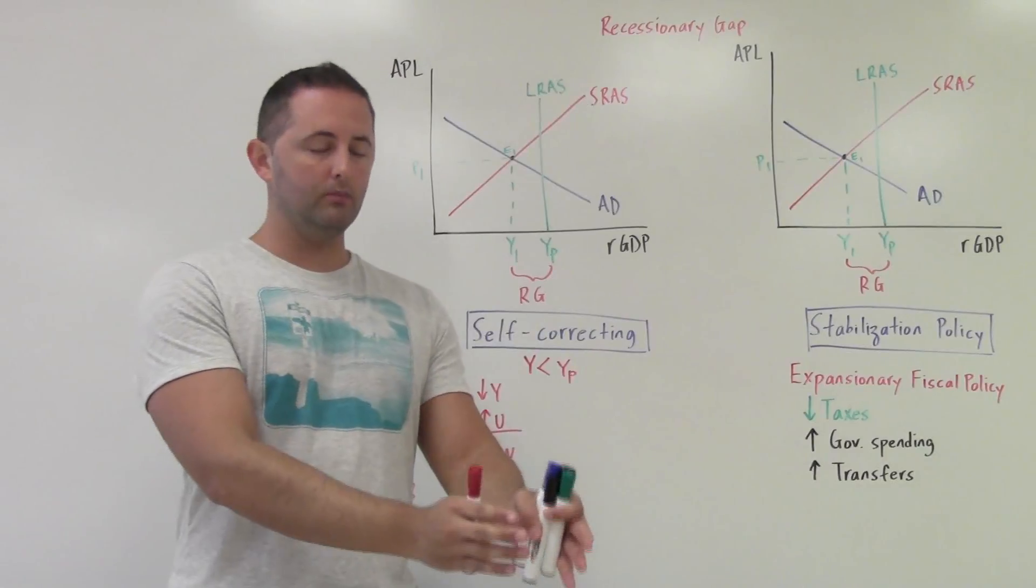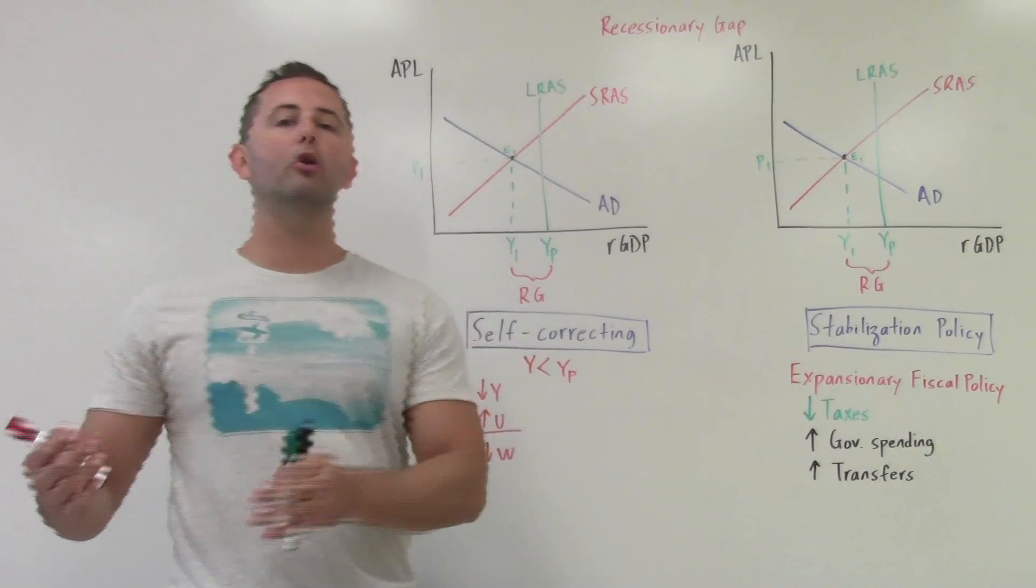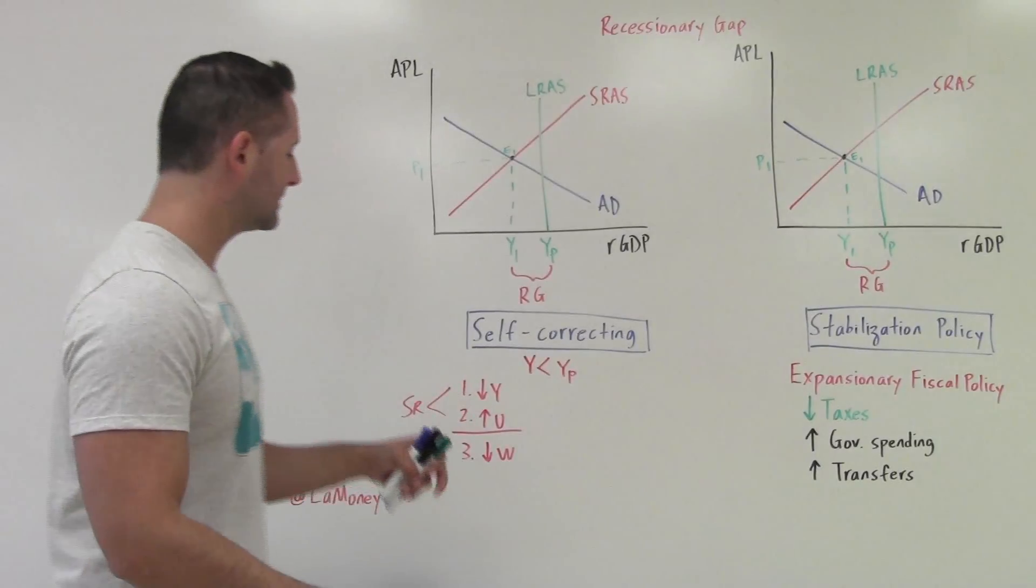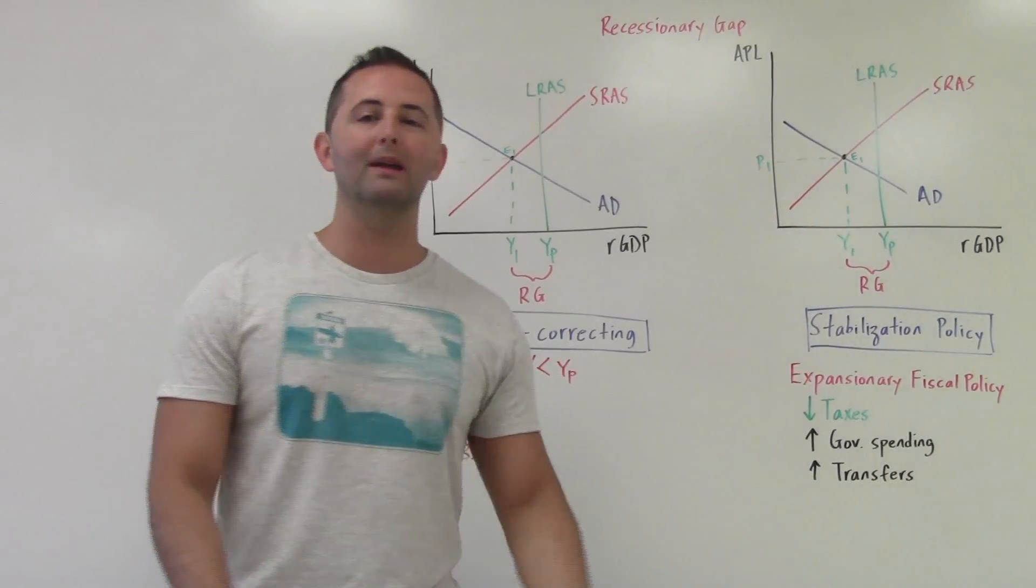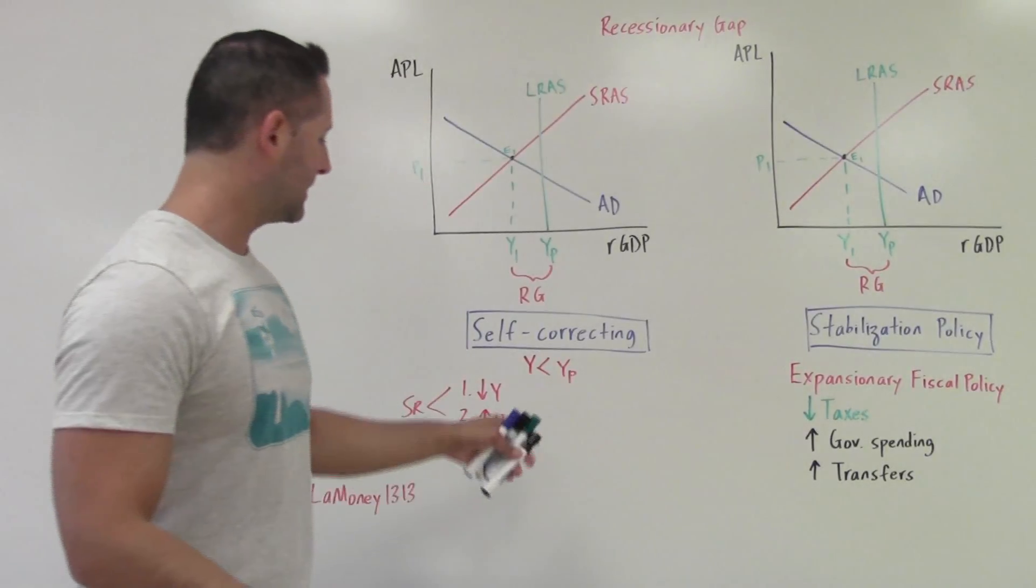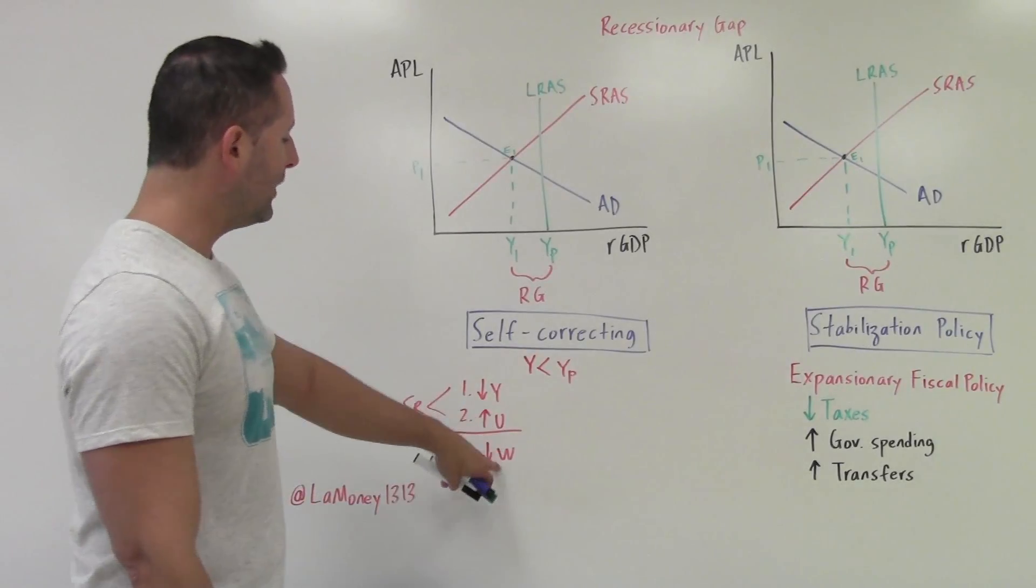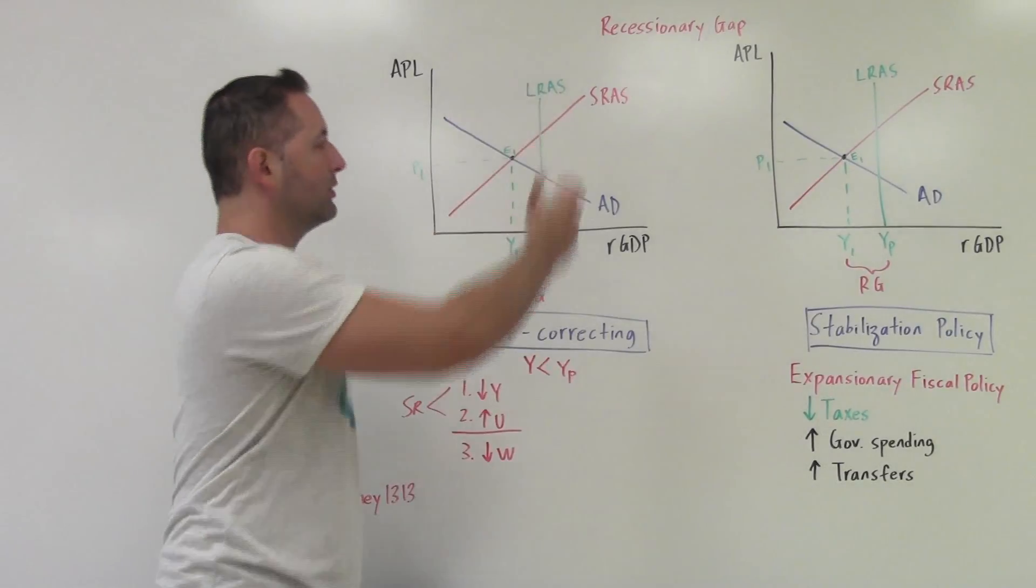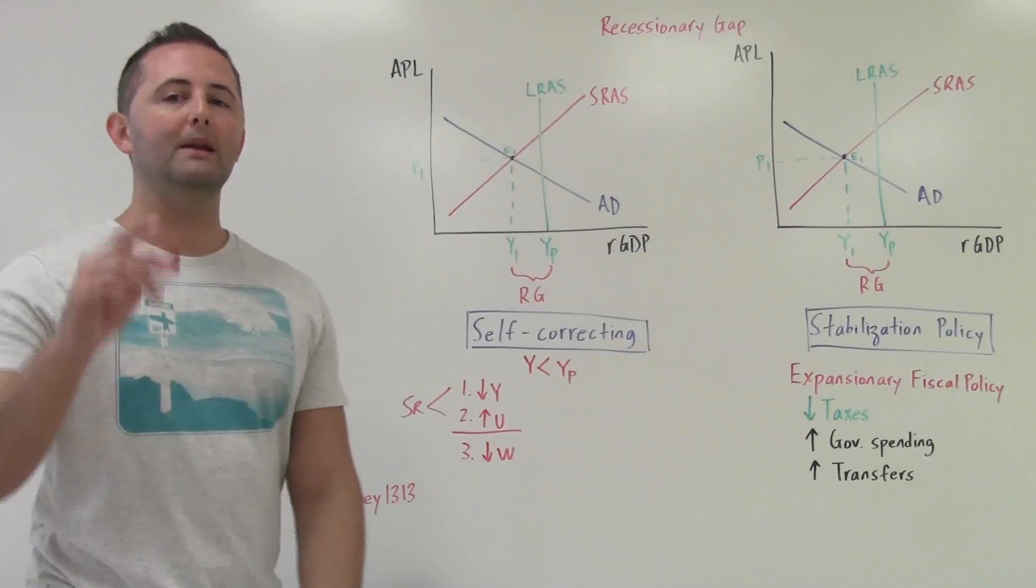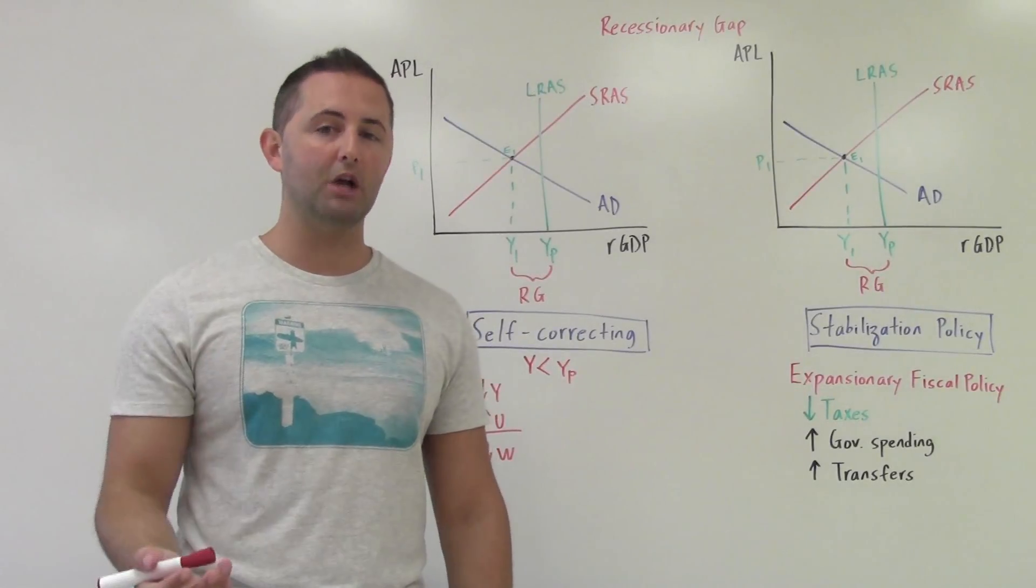Short run, wages are sticky, they are slow to change. In the long run, they become flexible, which means they adjust. So because we have high unemployment, wages are going to fall. In that video, I drew it on a supply and demand model to show exactly why that is, because the demand for labor is decreasing, so wages fall. Now when this occurs, we still haven't shown anything on our model. But now,